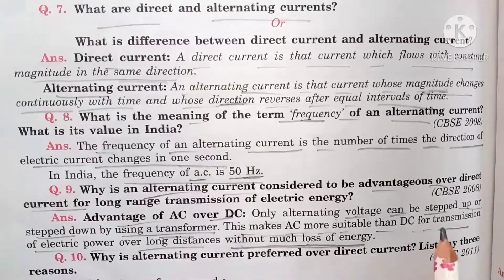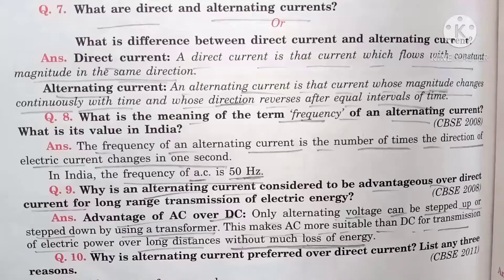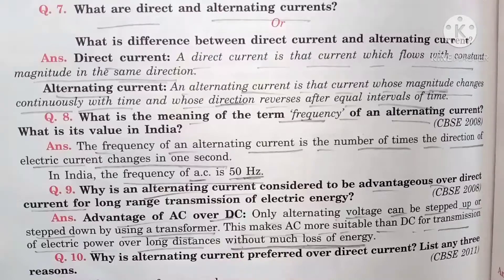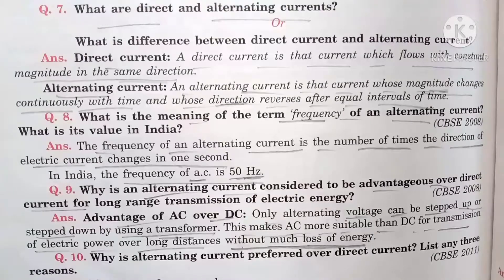AC has a very small loss of energy, that is why AC is preferred over DC. The transformer can step up or step down alternating voltage. An AC generator is a source of alternating current, while a dry cell is a source of direct current.